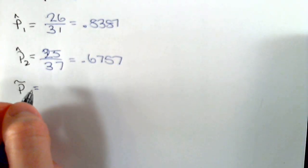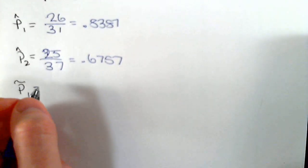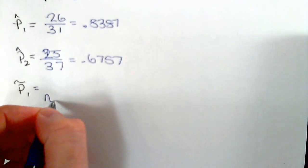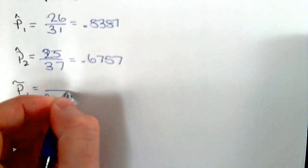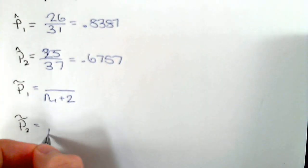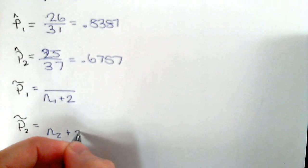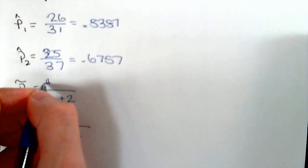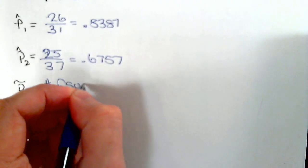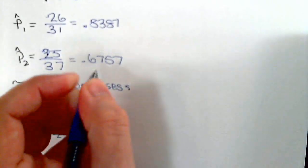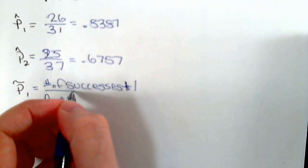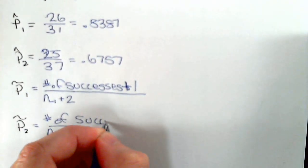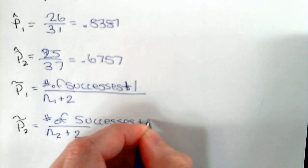The tilde means we're going to add plus 4, so we add 2 to each sample size and add 1 to each number of successes. So it's number of successes plus 1 over sample size plus 2.